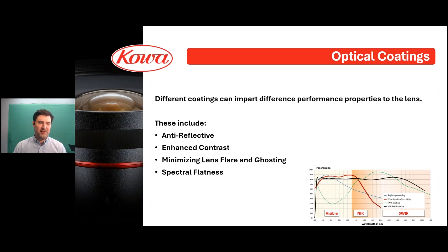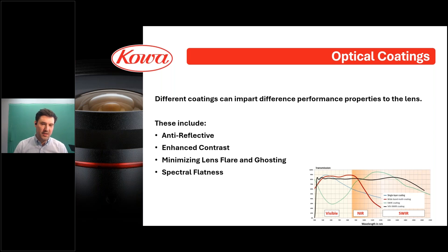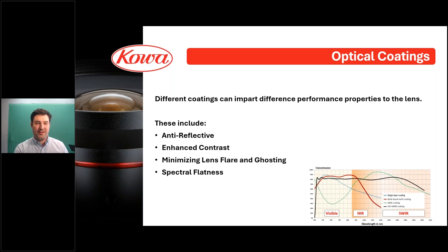Optical coatings are one way that lenses are optimized, as you could see in the transmission graphs. Applying different coatings to the optics can have several benefits. They can have anti-reflective properties — coatings applied to reduce reflections off lens surfaces thereby increase the amount of light transmitted through the lens. This is crucial for hyperspectral and multispectral imaging as it improves the light-gathering capability of the system and the quality of your data. Enhanced contrast is also achievable — reducing stray light and reflections using these coatings can improve image contrast, which is important for distinguishing subtle spectral differences and getting sharper peaks in your spectral data.